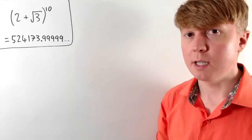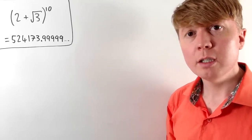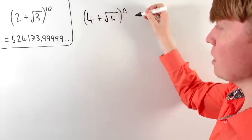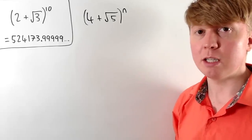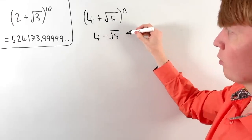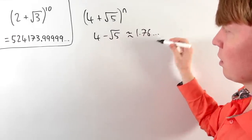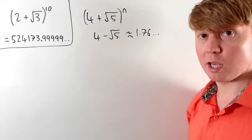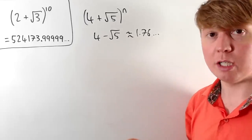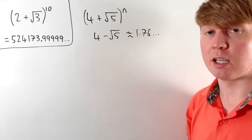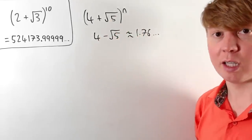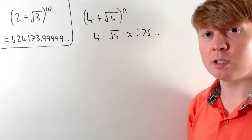Unfortunately, this doesn't work for any pair of numbers. You couldn't take, for example, 4 plus the square root of 5 and raise it to a large power and expect it to be almost an integer. The reason is that if we look at the error term, 4 minus root 5 is around 1.76. When we raise that error term to a large power, it actually gets bigger and bigger — whereas with 2 minus root 3, the error term was small and got smaller. So there's no reason to expect 4 plus root 5 to a large power to be close to an integer.